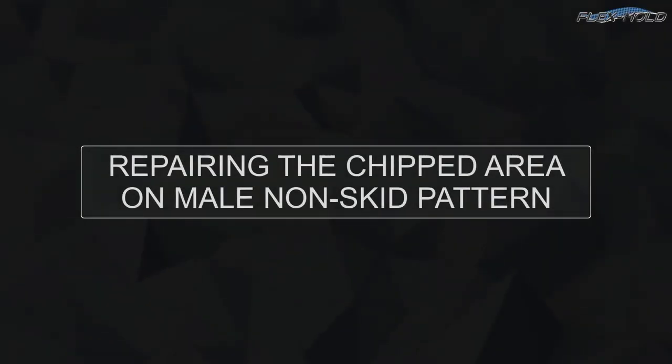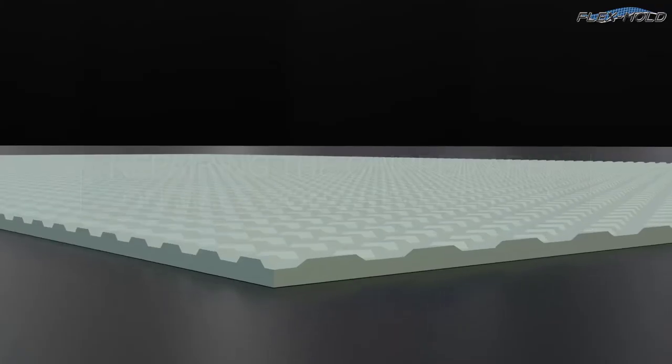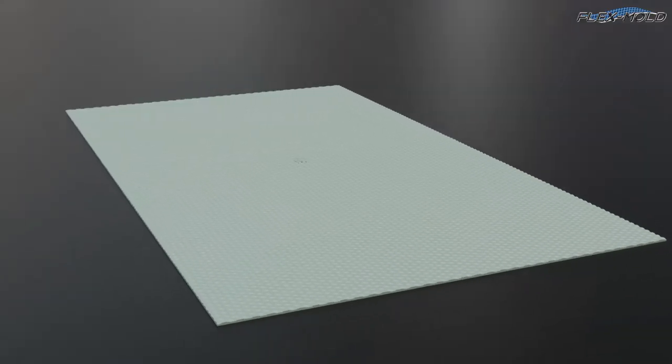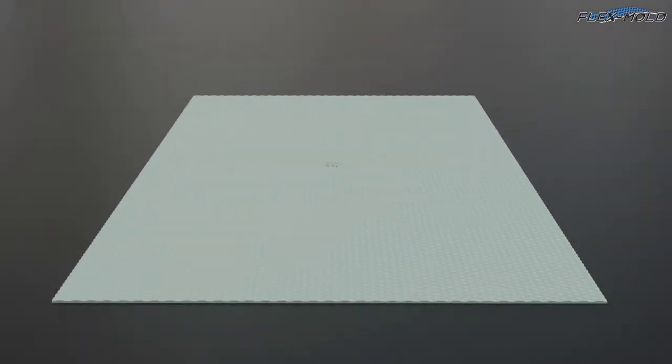Repairing the chipped area on male non-skid pattern. Before proceeding with this process, remove flex mold from the tube and lay flat for 24 hours at least 70 degrees Fahrenheit.